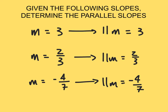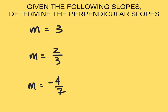Now let's look at a couple of perpendicular slopes. Given the following slopes, determine the perpendicular slopes. Remember what we want to do is take whatever our slope is and find the opposite reciprocal — flip the fraction and change the sign. So first, if I have a slope of three, that's really three over one. My perpendicular slope: I flip my fraction, write it as one third, and make it negative.